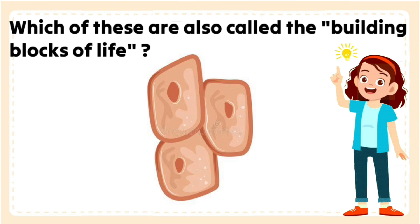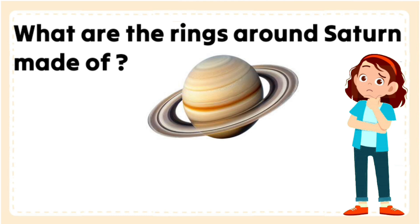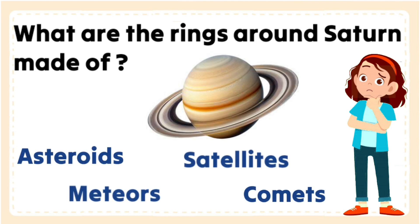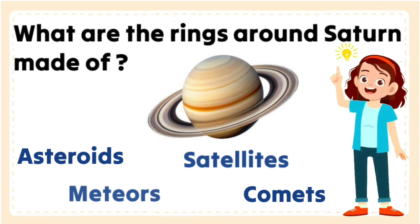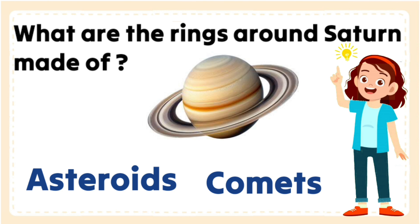Take in nutrients from food and convert those nutrients into energy. What are the rings around Saturn made of? Asteroids, satellites, meteors or comets. The Saturn's rings are thought to be pieces of comets or asteroids.